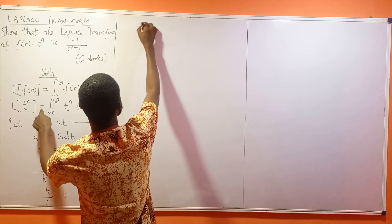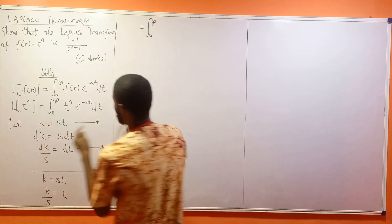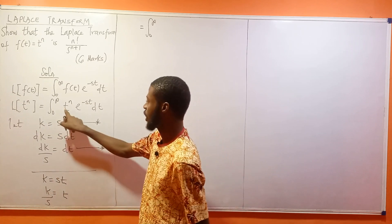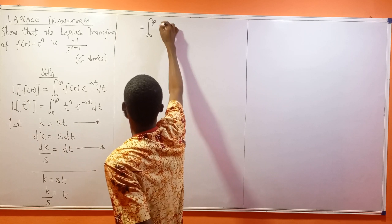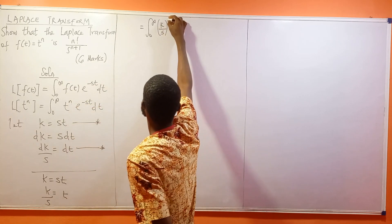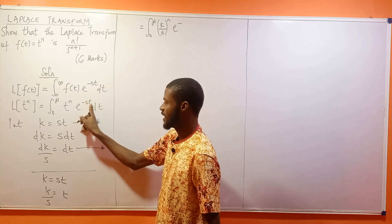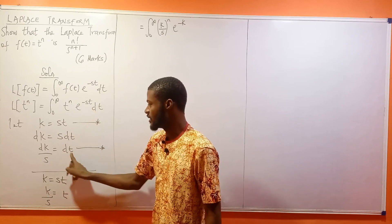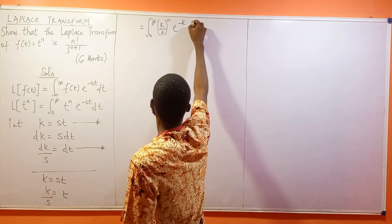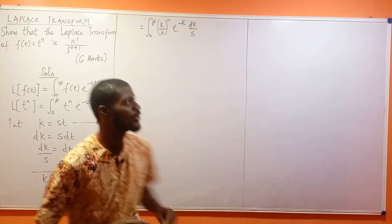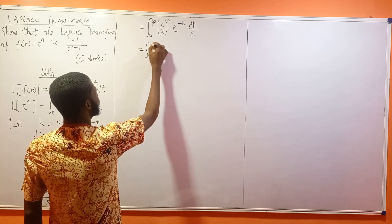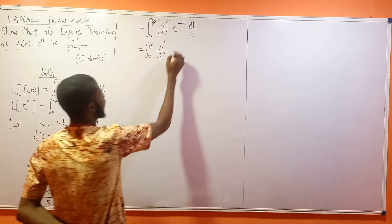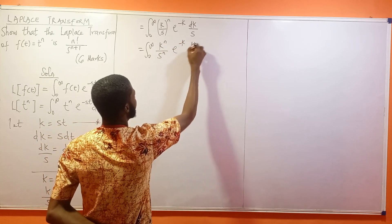So this equals the integral from 0 to infinity of... t = k/s, so I write (k/s)^n. The exponential becomes e^(-k) since st = k. And dt = dk/s. So the expression is integral from 0 to infinity of (k/s)^n e^(-k) dk/s.